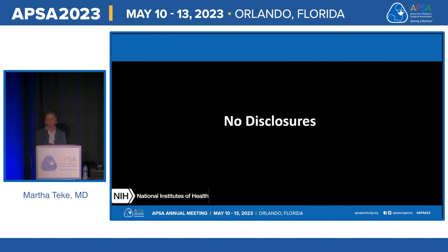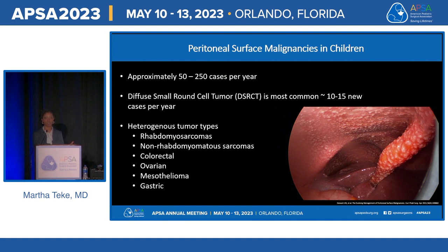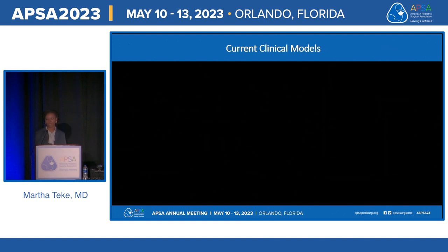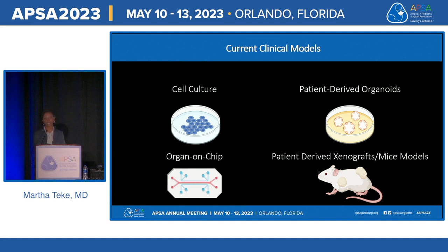Peritoneal surface malignancies in children are very rare, accounting for approximately 50 to 250 cases per year, with desmoplastic small round cell tumor — the most common — accounting for about 10 to 15 new cases per year. This group forms a heterogeneous set of tumors including sarcomas and epithelial types such as ovarian and gastric cancer. Due to rare histologies and incidence, there is a need for a window of opportunity tumor model. Currently available models — cell culture, patient-derived organoids, organ-on-a-chip, and mouse models — all have challenges in translatability to patient outcomes.